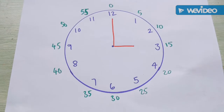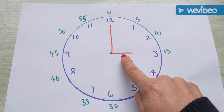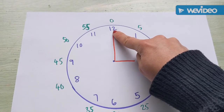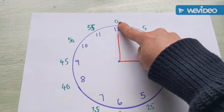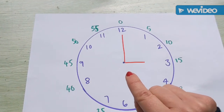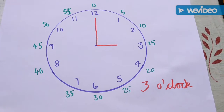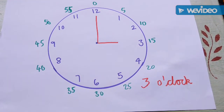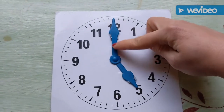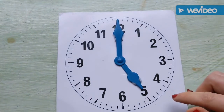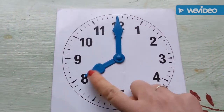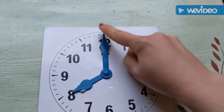Now we're going to think about some o'clock times. Here we can see that the short hand, the hour hand, is pointing exactly to the three, and the long hand, the minute hand, is pointing up towards the twelve - really pointing to zero minutes - showing that it's zero minutes past three, exactly three o'clock. For five o'clock, the hour hand is pointing to the five and the minute hand is pointing to the twelve. And for eight o'clock, the hour hand's pointing to the eight and the minute hand's pointing up to the twelve where there's zero minutes.